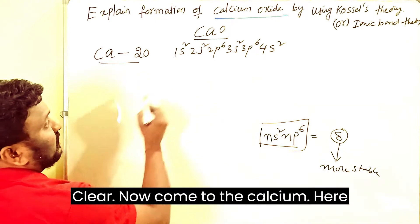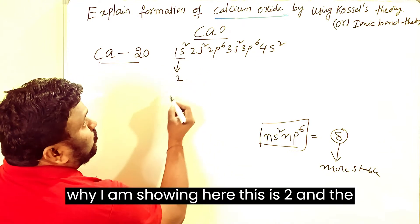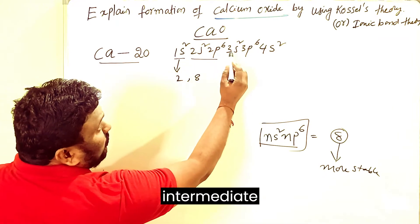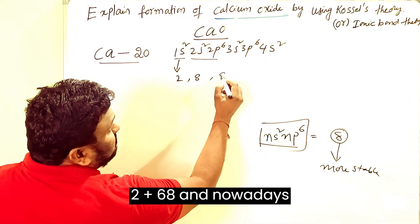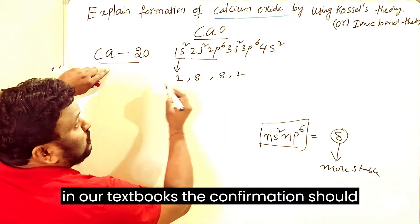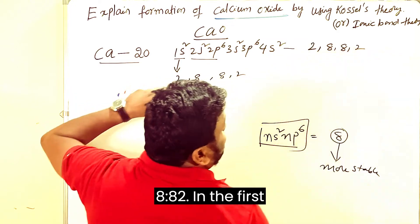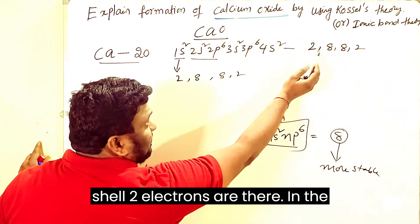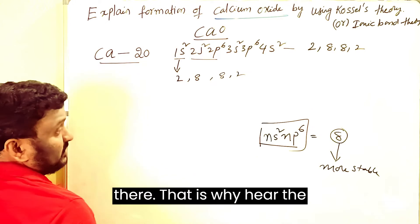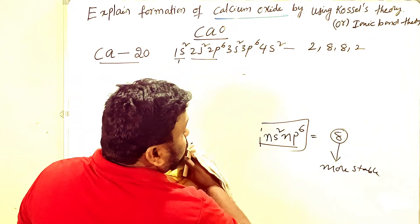For calcium, 1s² is the first shell — that's 2 electrons. In the second shell: 2+6=8 electrons. In the third shell: 2+6=8 electrons. In the fourth shell: 2 electrons. So the shell distribution in our textbooks is written as 2, 8, 8, 2. Calcium needs to lose electrons to get 8 electrons in its outermost shell.